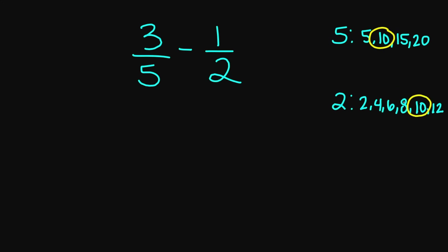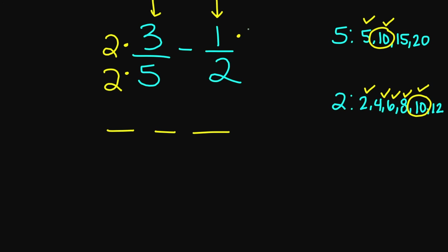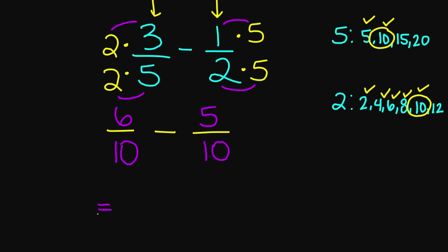So I need to get 10 in my denominator. For 3 over 5, I multiply top and bottom by 2. For 1 over 2, I multiply top and bottom by 5. Now multiplying: 2 times 3 is 6 over 2 times 5 is 10. Minus 1 times 5 is 5 over 2 times 5 is 10. Now that my denominators are the same, 6 minus 5 equals 1, over 10. Your final answer is 1 over 10.